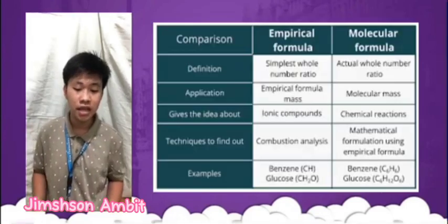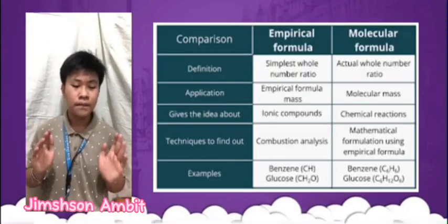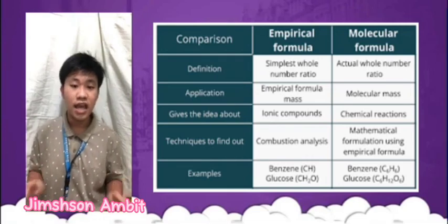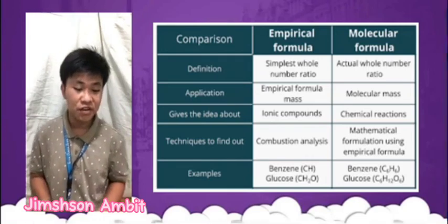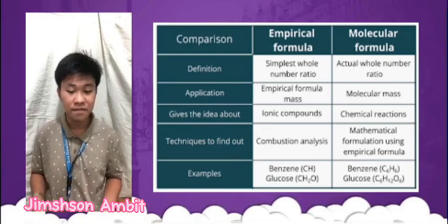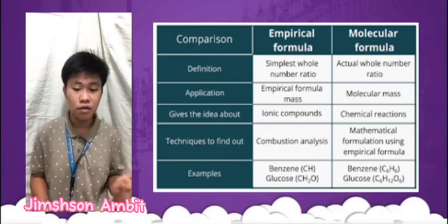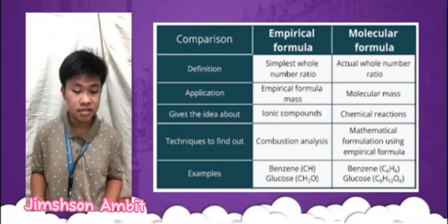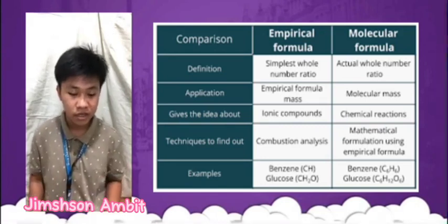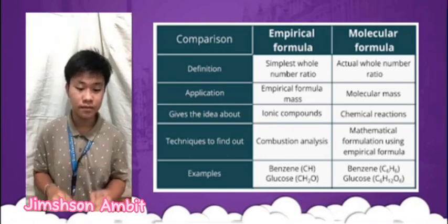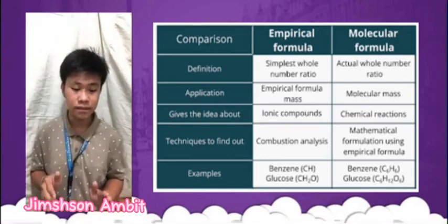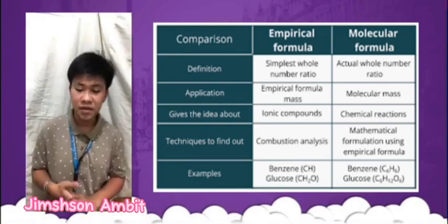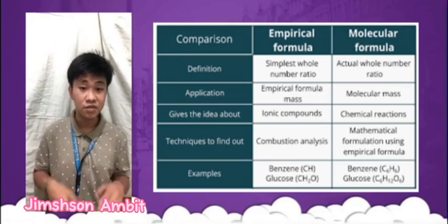To determine the empirical formula, the empirical formula of a compound can be determined by analyzing the elemental composition of the compound. This can be done by a variety of methods, including composition analysis, elemental analysis, or mass spectrometry. Once the empirical formula is known, the molecular formula can be determined if the molecular weight of the compound is also known.